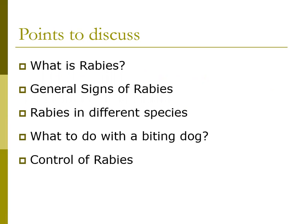Rabies is a disease of the brain which can affect all animals as well as humans. It is caused by germs transferred through the bites of rabid or sick carnivorous animals such as dogs, foxes, wolves, hyenas, and some blood-sucking bats. When the rabid animal bites another animal or human, the germs living in its saliva pass into the body through the wound, and travel along the nerves toward the brain.